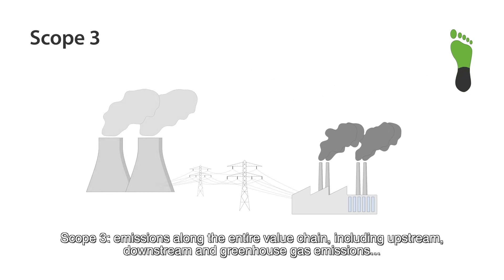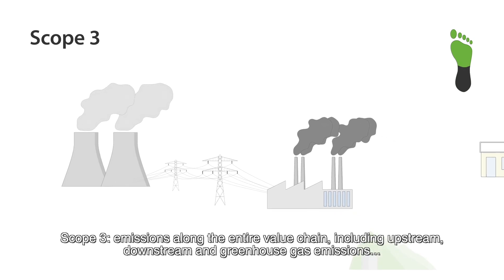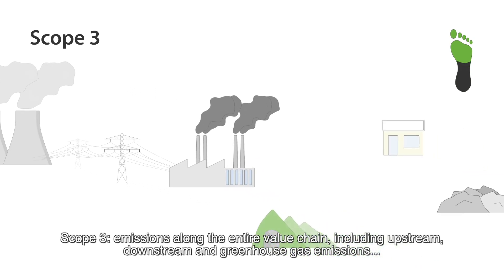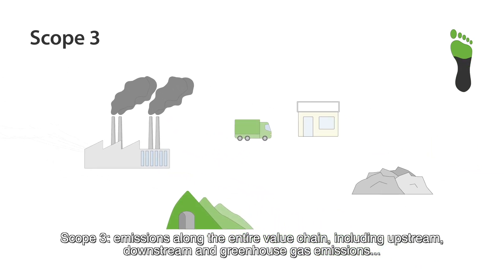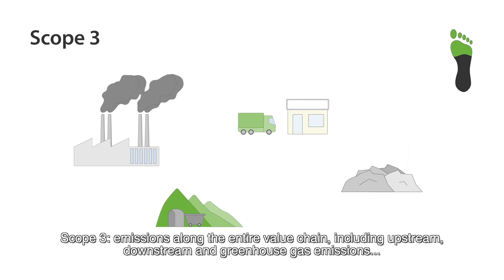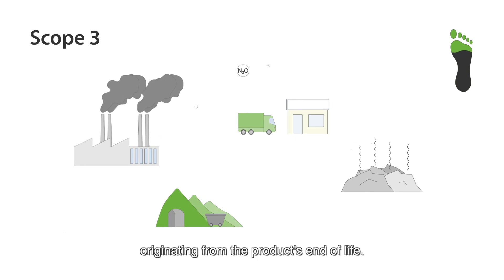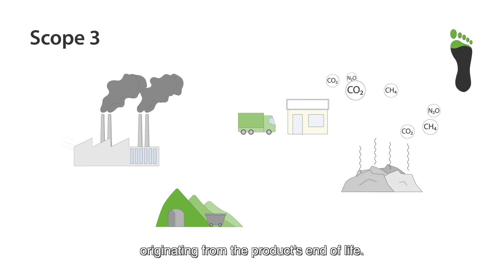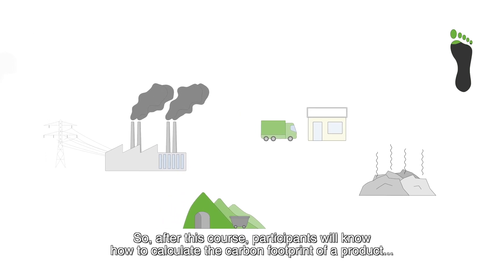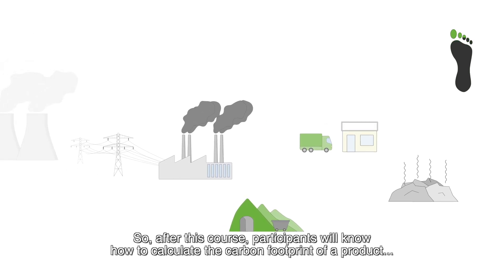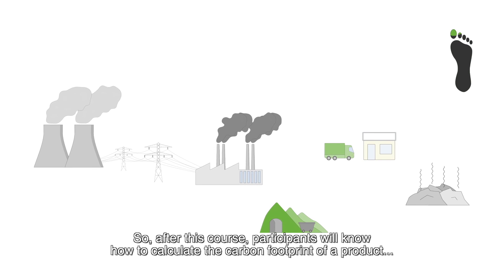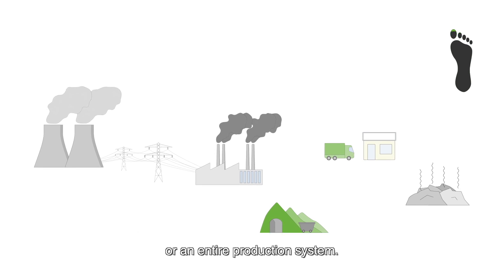Scope 3: emissions along the entire value chain, including upstream, downstream, and greenhouse gas emissions originating from the product's end of life. So, after this course, participants will know how to calculate the carbon footprint of a product or an entire production system.